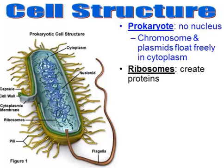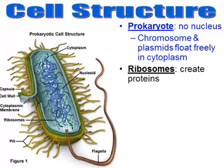Looking at the diagram, you can see certain cell parts that bacteria do possess. They have organelles called ribosomes — eukaryotic cells have ribosomes as well. Their job is to make proteins through the process of translation, linking amino acids in long chains to ultimately build a protein.